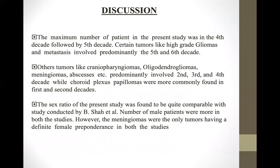The maximum number of patients was seen in the fourth decade, followed by the fifth decade. Certain tumors like high-grade gliomas and metastasis involved patients later in life, in the fifth and sixth decades. Tumors like craniopharyngioma, oligodendrogliomas, meningiomas, and abscesses occurred earlier, in the second to fourth decades, whereas choroid plexus papillomas were seen in the first two decades.